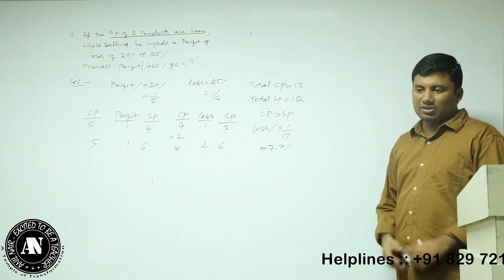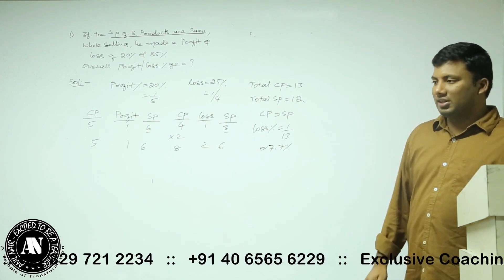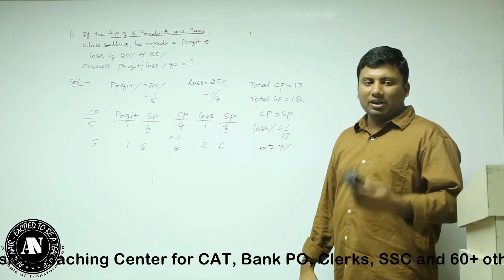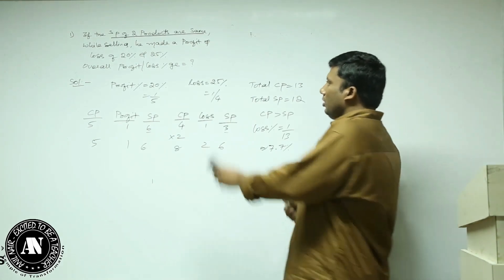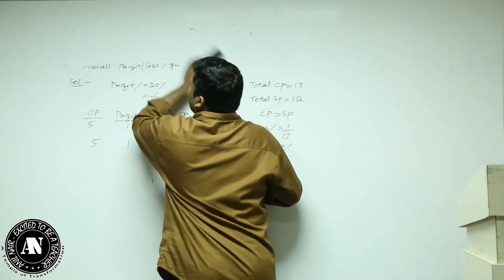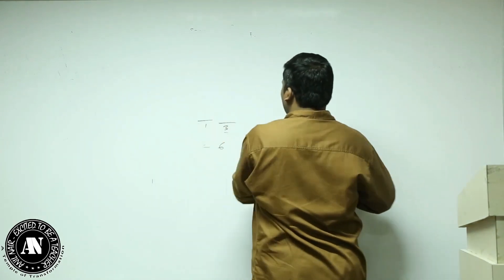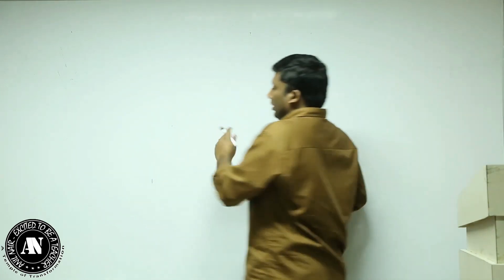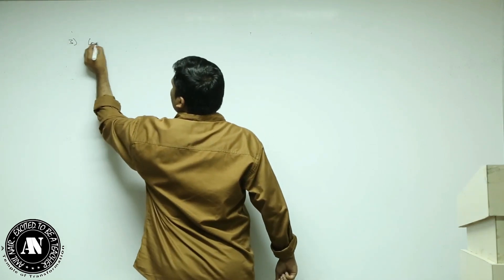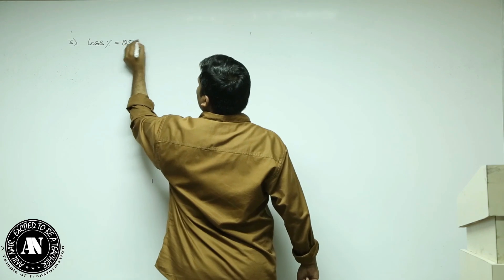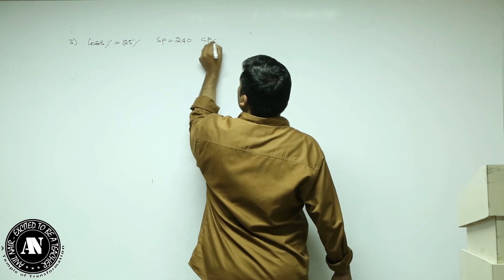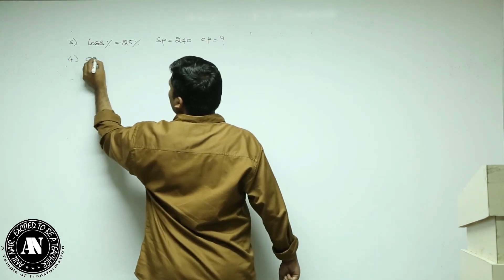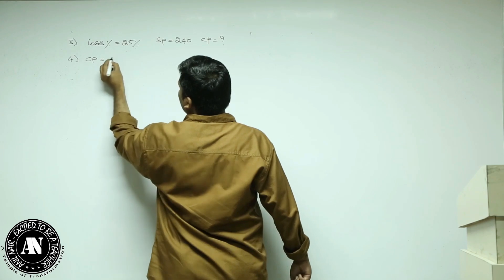Third and fourth questions are very easy. I am trying to solve entire profit, loss, and discount using these fractions. Third one: loss percentage is 25%, selling price is 240, what is cost price? The answer is 320.